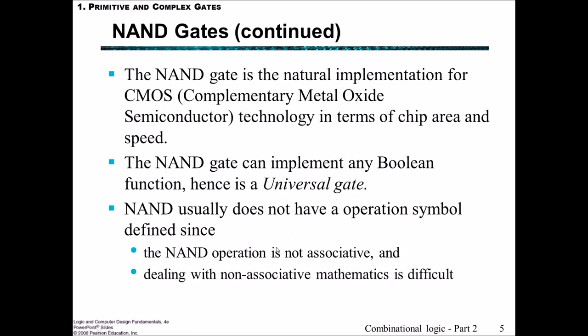The NAND gate is a natural implementation for the CMOS technology in terms of both chip area and speed, and the NAND gate can implement any Boolean function and so it's often referred to as a universal gate. The NAND usually doesn't have an operation symbol defined because NAND operation is not associative and dealing with non-associative mathematics is difficult.